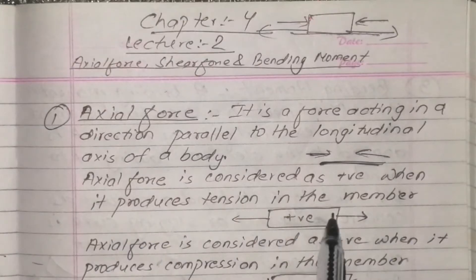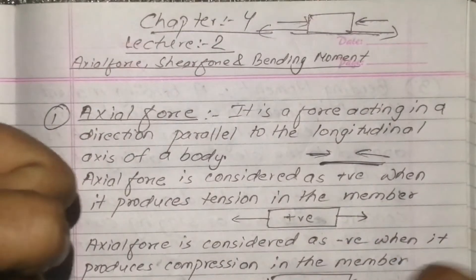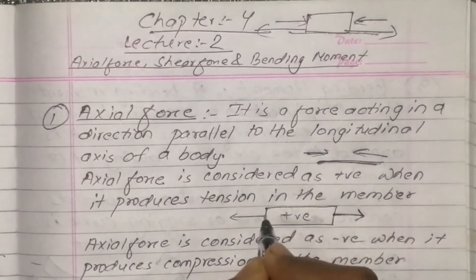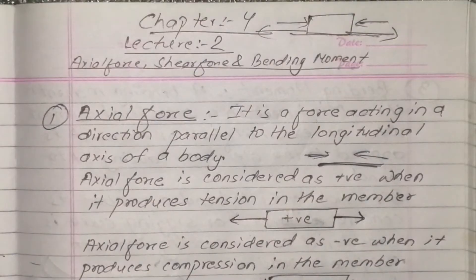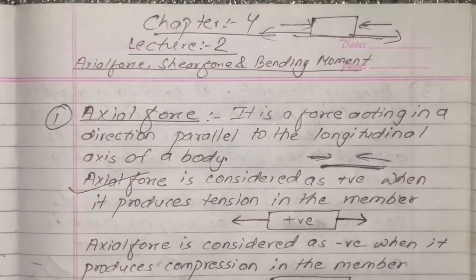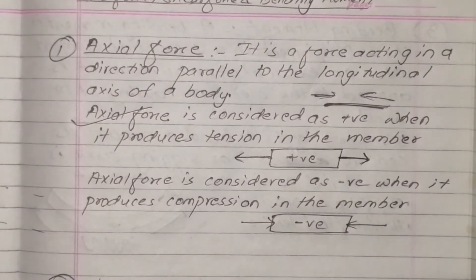Axial force is considered positive when it produces tension in the member. Axial force is considered negative when it produces compression in the member.